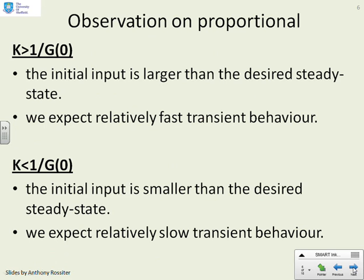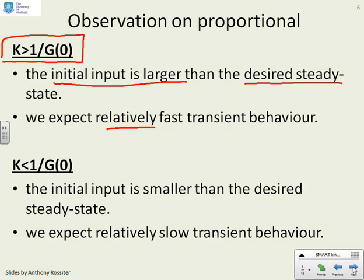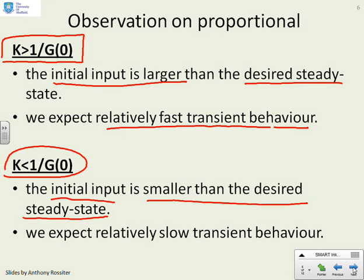This is a very simple observation which gives us insight into how we might go about choosing the proportional term. It really depends on whether you want fast transient behavior or slow transient behavior. If k > 1/g(0), expect fast transients. If k < 1/g(0), expect slow transients.